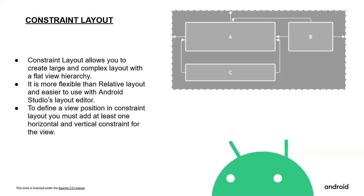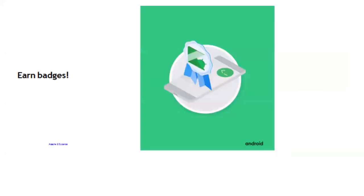Coming to one of the most important layouts — constraint layout. A constraint layout allows you to create large and complex layouts with a flat view hierarchy. It is more flexible than relative layout and easier to use with the Android Studio layout editor. To define a view's position in constraint layout, you must add at least one horizontal and one vertical constraint for the views. This is all from my part — after doing all these things, you will earn the badges, which is the most important part of Android Study Jam.